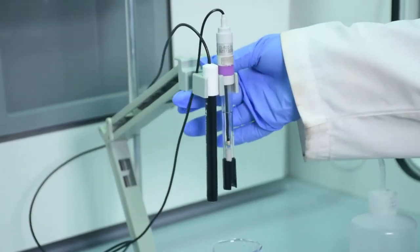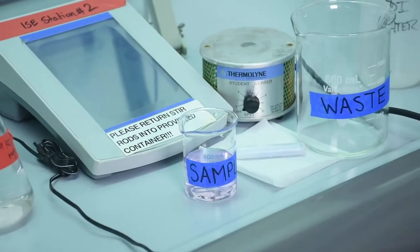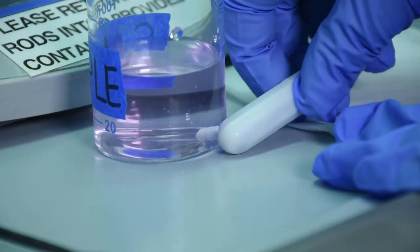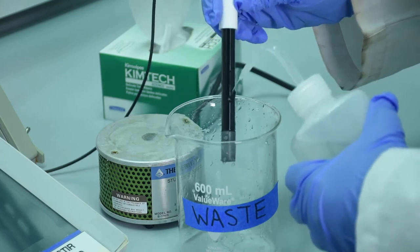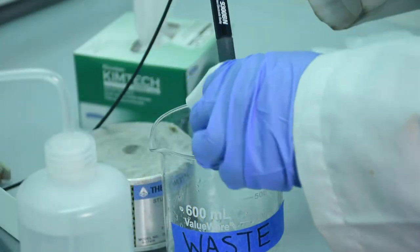Once the potential of the sample has been recorded, remove the stir bar using a magnetic wand or a larger stir bar. Rinse the stir bar and the electrodes with deionized water, then dry the electrodes by blotting them as shown previously.